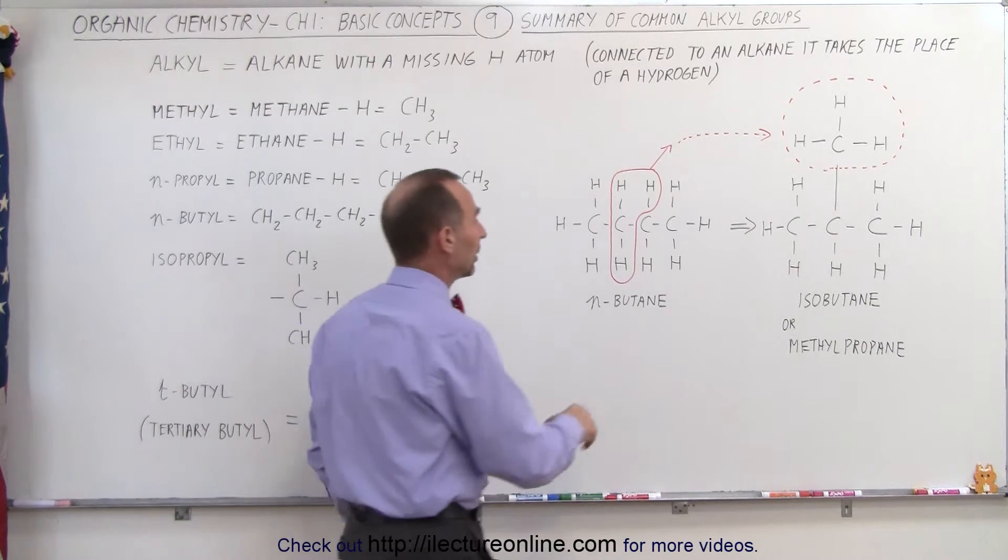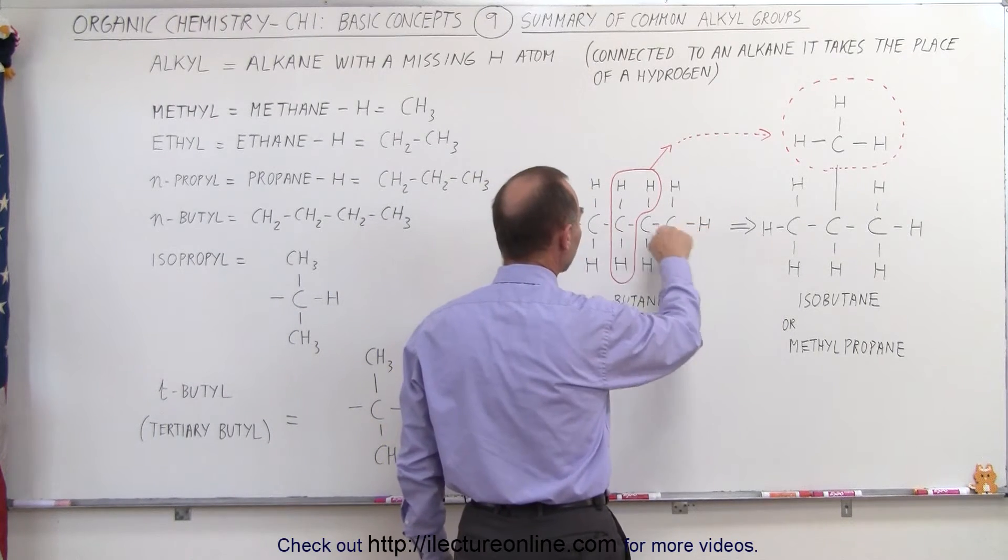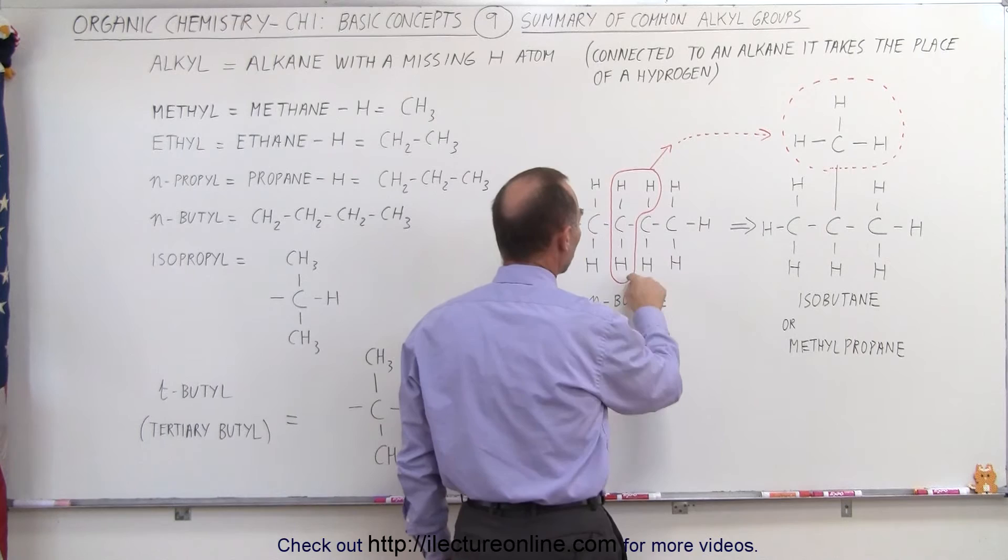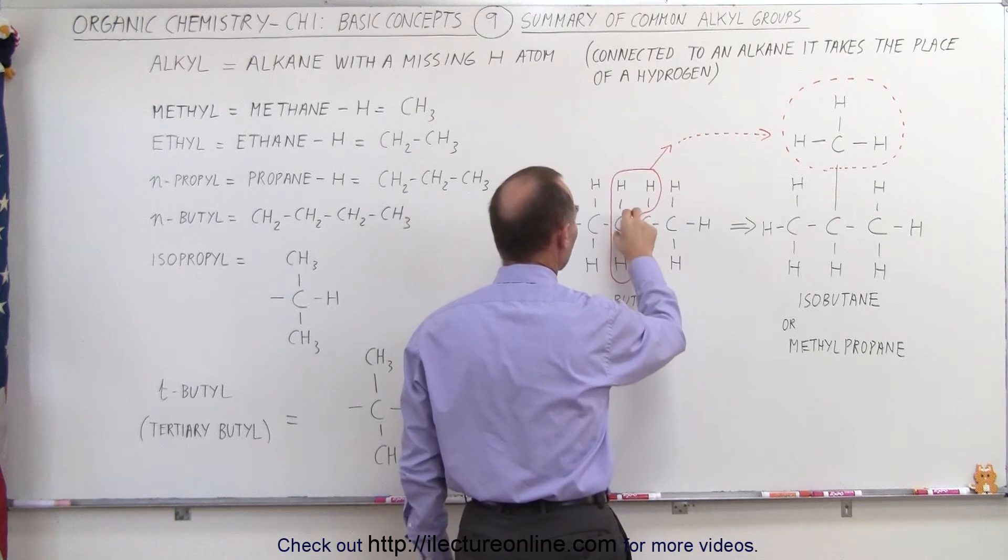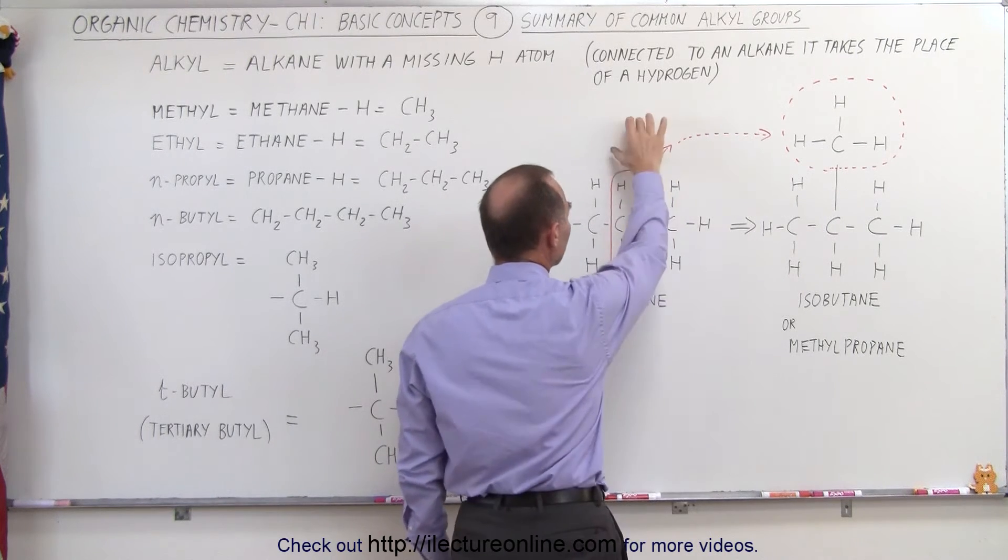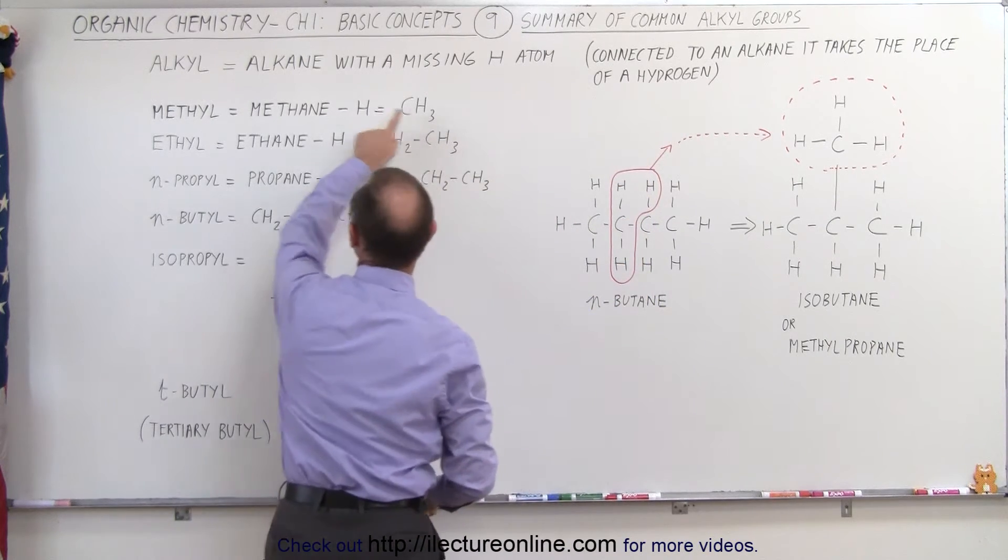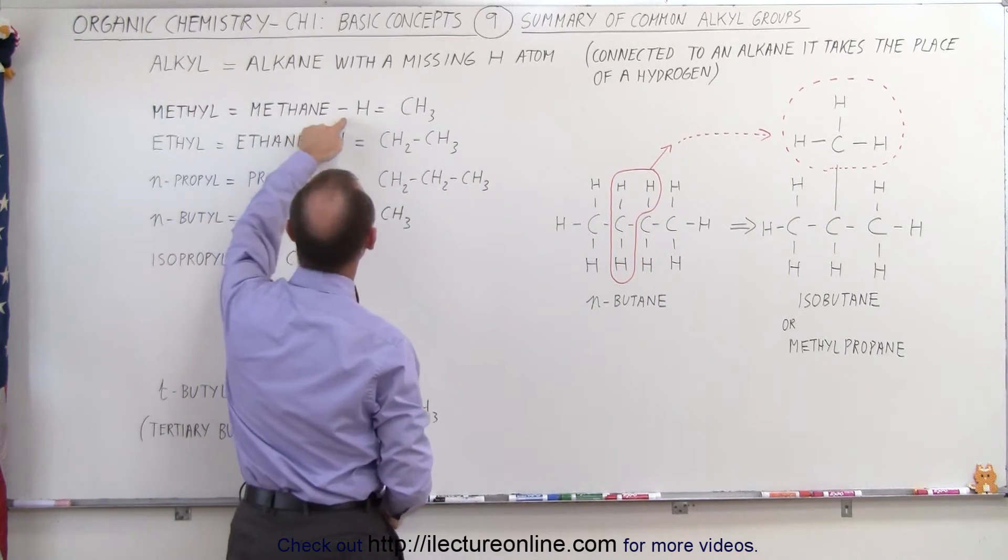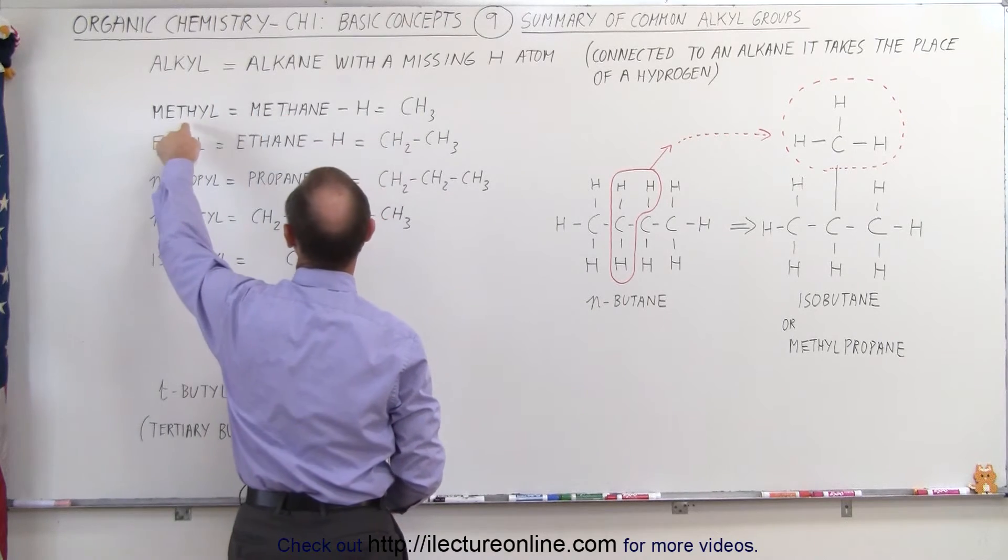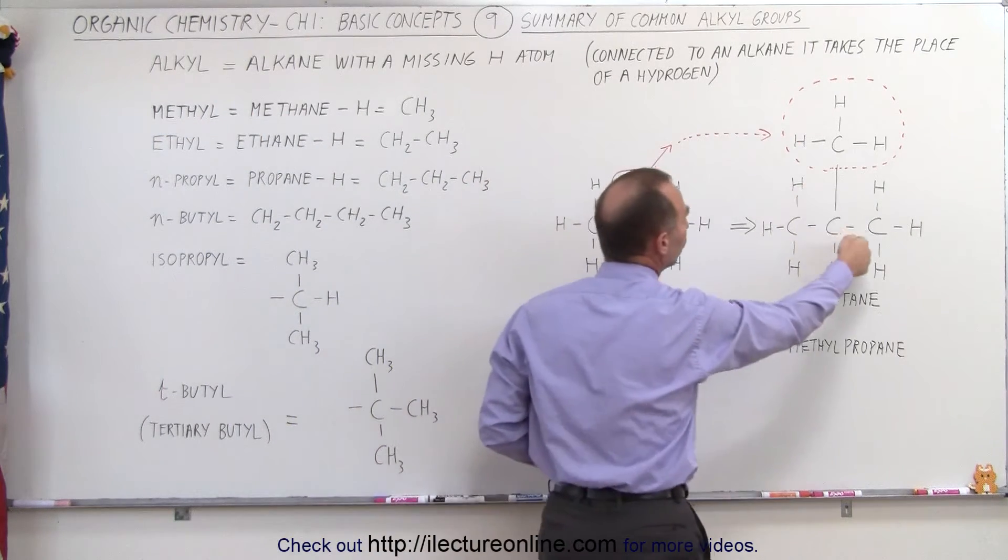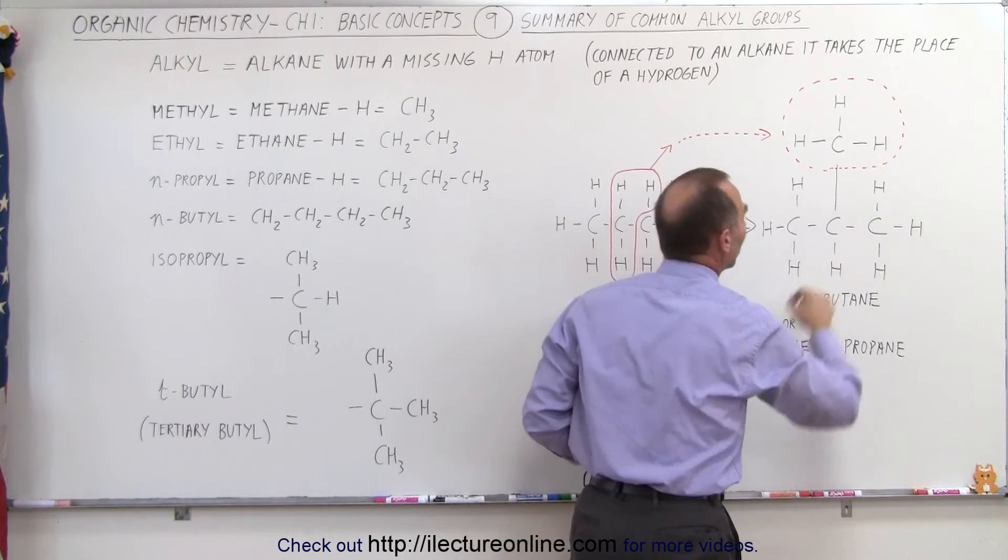For example, here we have n-butane, which is linear butane. We have four carbon atoms. We remove these atoms right here, a carbon and three hydrogens. And of course, a carbon with three hydrogens is basically a methane minus a hydrogen atom, which then is called a methyl, and then we can connect it to one of the carbons in the chain.